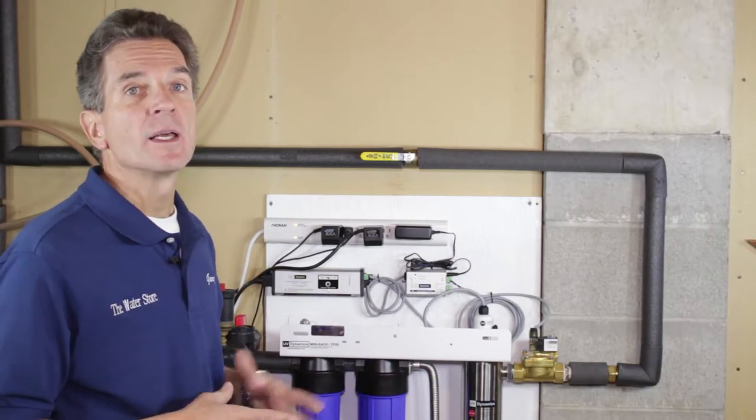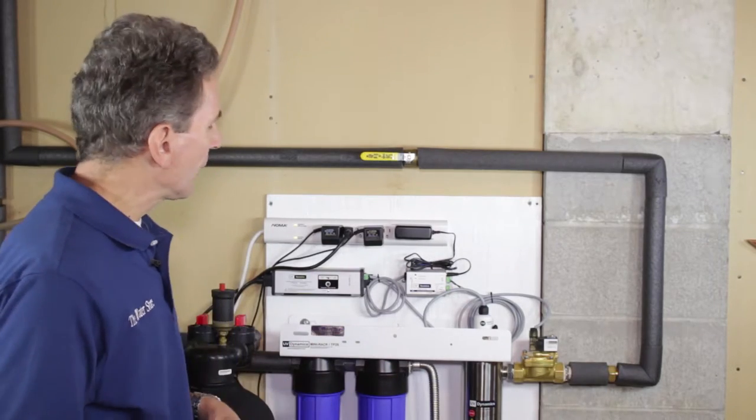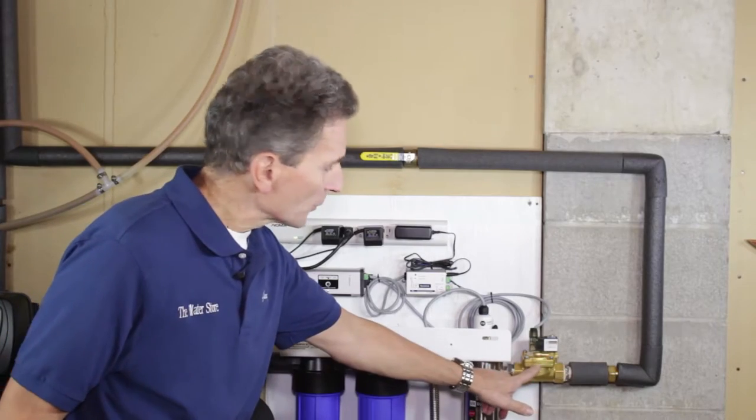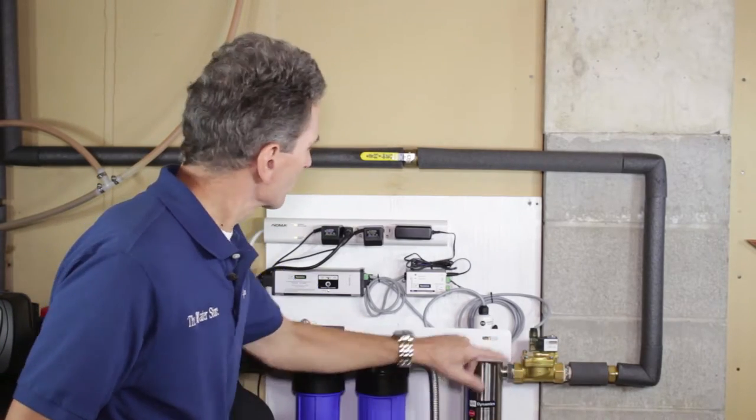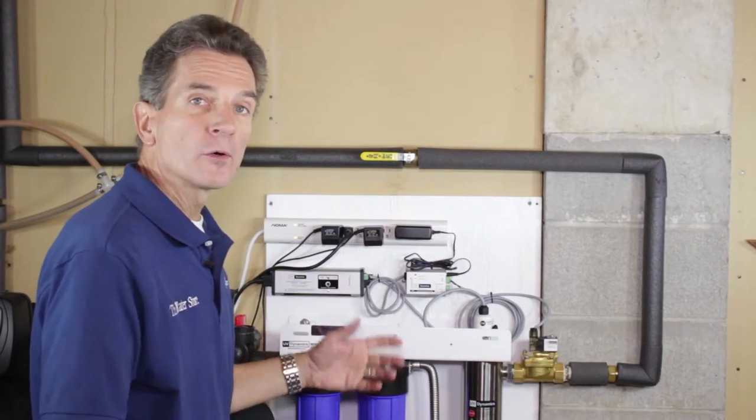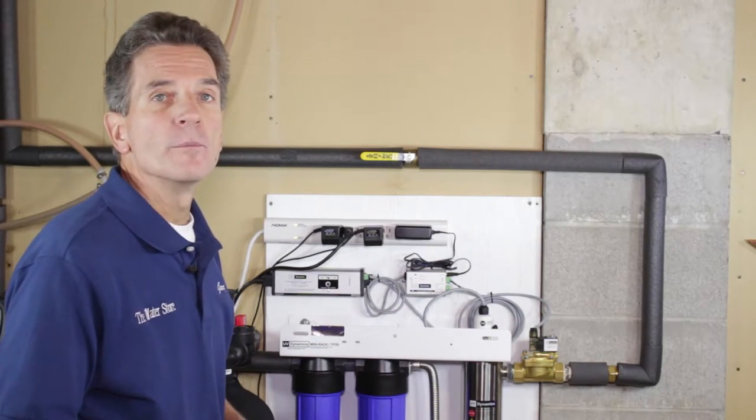So this UV dynamic system here obviously is, and so this is the actual solenoid valve itself. It's installed after the ultraviolet light, and then this is the controller here. So if the power goes out, it shuts off the water flow immediately.